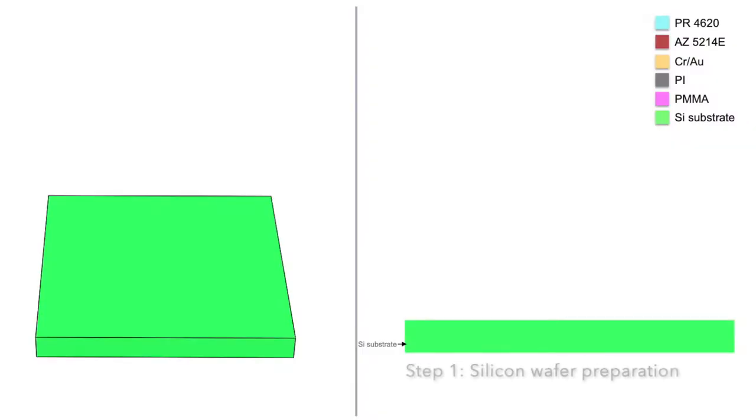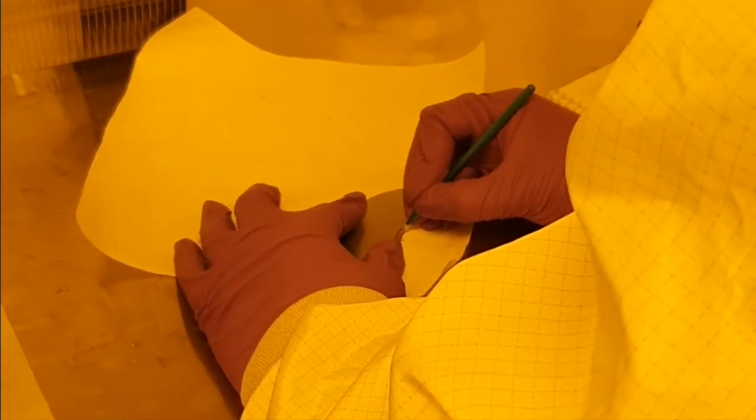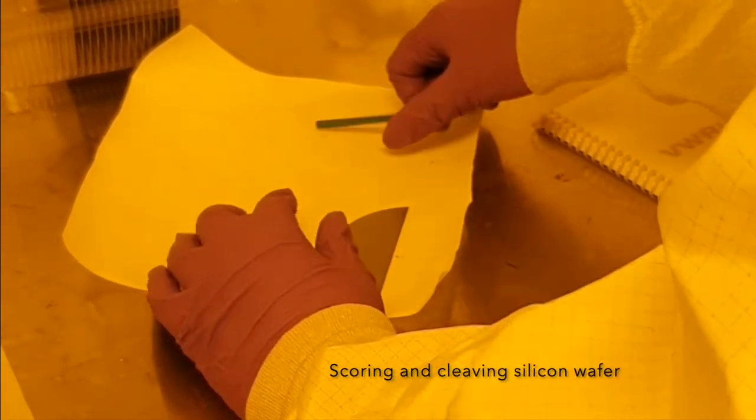First, we use a flat, polished silicon wafer as our base substrate. This makes a good choice for conformable devices because the substrate remains stable under different thermal and chemical conditions that will be used to process the sensor. Let's cleave the wafer to our desired form factor.